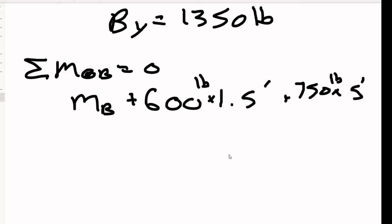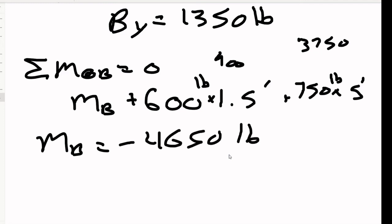So we've got the negatives cancel out, which means that we can solve for Mb by taking these, moving them over to the other side. So Mb is going to be equal to, let's see, 600 times 1.5 is 900. And 750 times 5, that's 3,750. So take them over to the other side. And we've got a negative 4,650 pound feet.